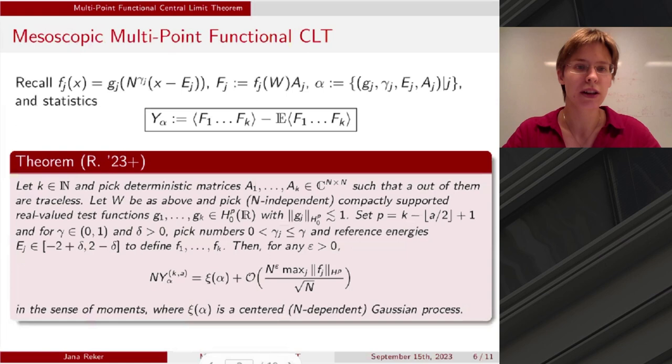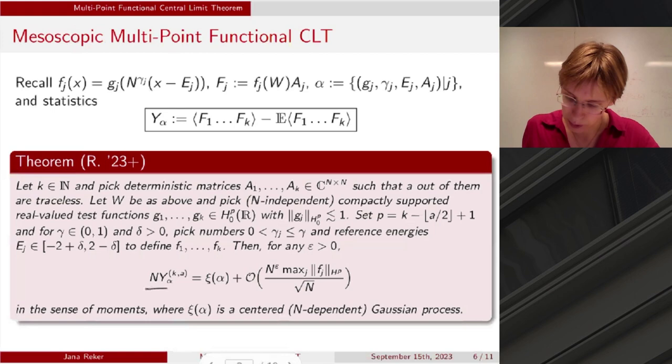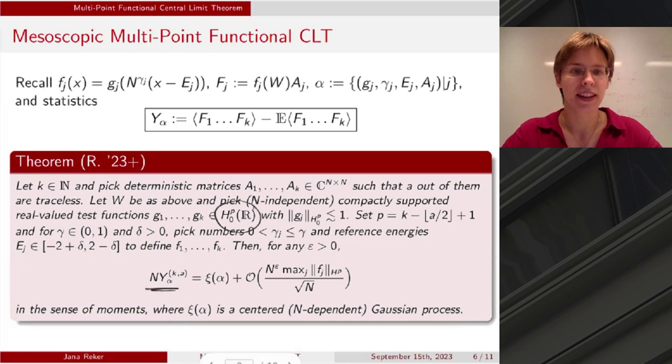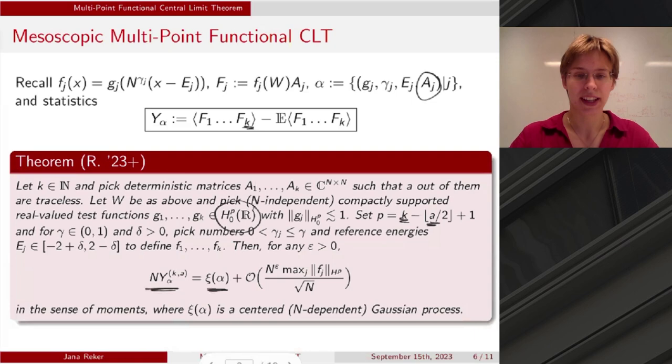So, here we have a theorem. Again, those are the statistics that we're looking at. And long story short, if you multiply it in the same way with N as we did, as we've seen on the previous slides, this will be asymptotically Gaussian in the sense of moments. One thing that I have not told you yet is what we mean by a regular test function. Actually, it turns out that we can feed this Sobolev functions. And this P depends now on the length of the product here. This decay here and also the small a, which is the number of traceless matrices among the deterministic matrices. So, similar to the Cipolloni-Erdős-Schröder result, tracelessness does play a role.